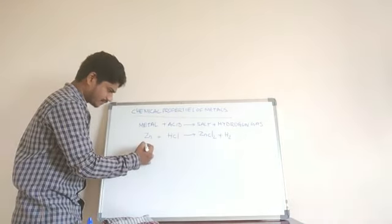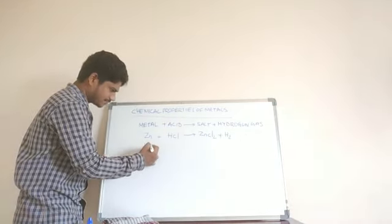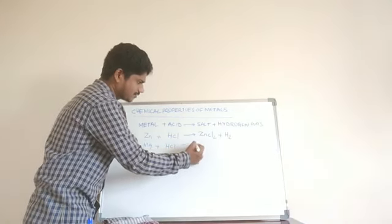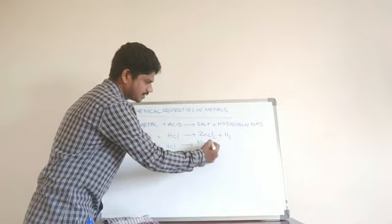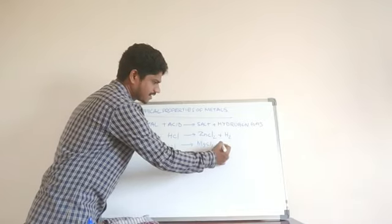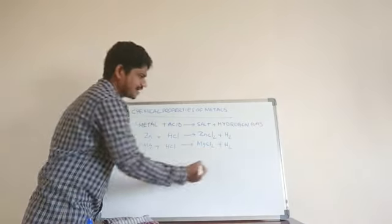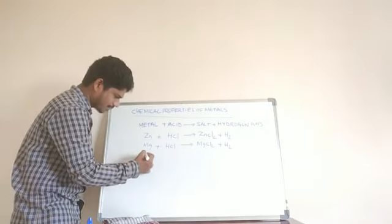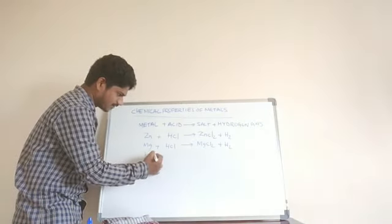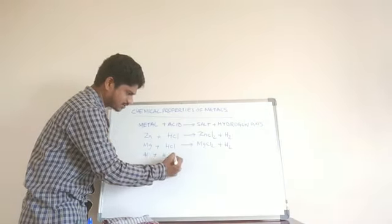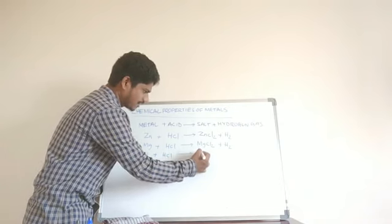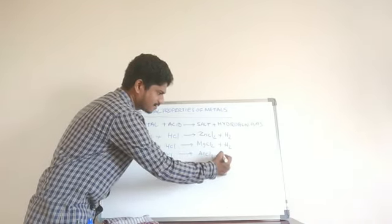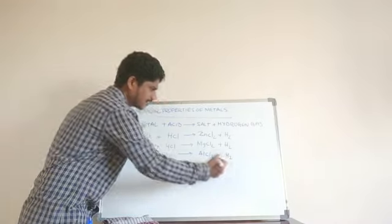Take magnesium — when it reacts with HCl, it is going to produce MgCl₂, that is magnesium chloride, along with hydrogen gas. Take aluminium, which reacts with hydrochloric acid; there you are going to get aluminium chloride, that is AlCl₃, plus hydrogen gas.